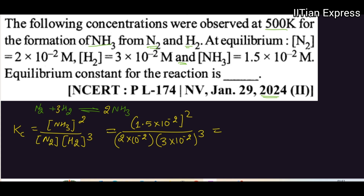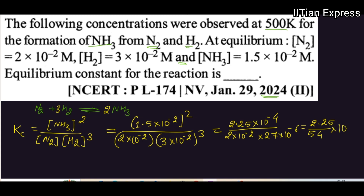Simply you have to simplify it. 1.5 × 1.5 is going to be 2.25 × 10⁻⁴, divided by 2 × 10⁻² multiplied by 27 × 10⁻⁶. Further this can be written as 2.25 divided by (27 × 2) which is 54, and 10 to the power of +6 + 2 − 4, that is going to be 10⁺⁴.